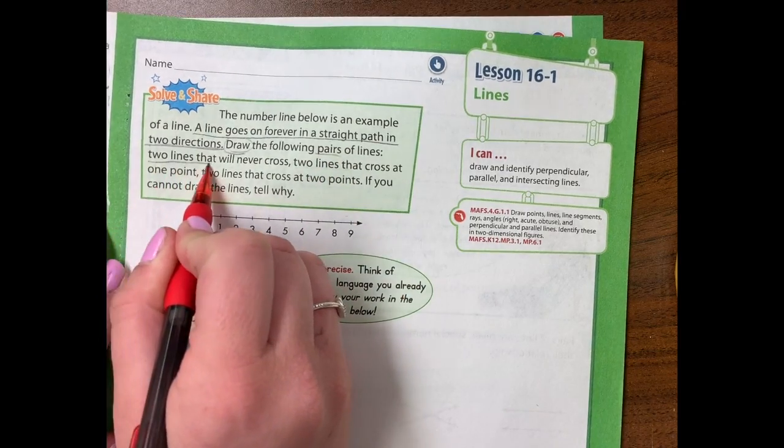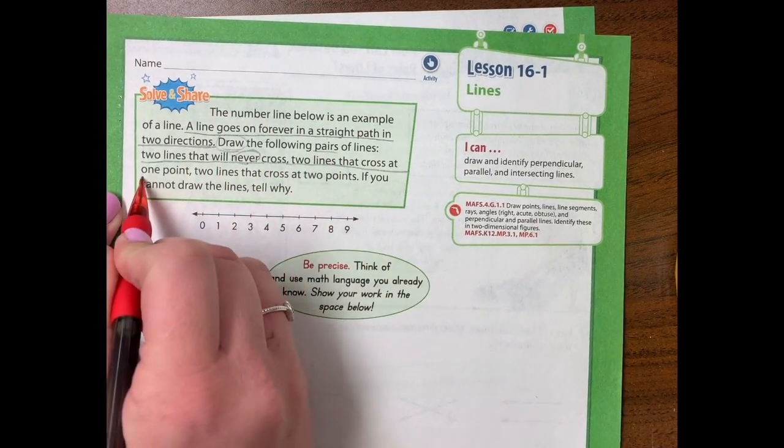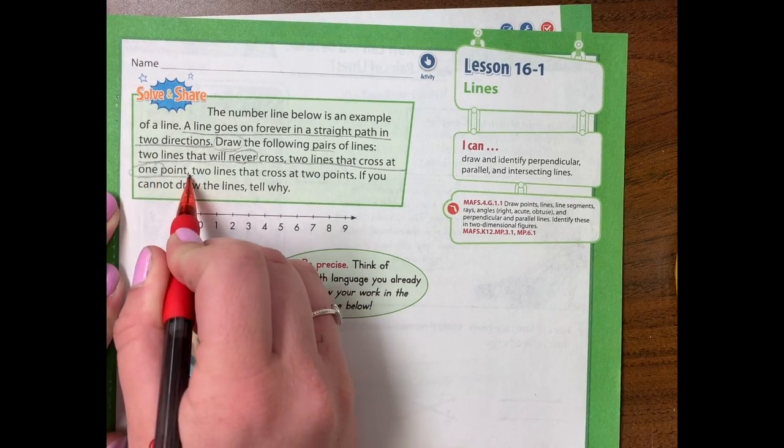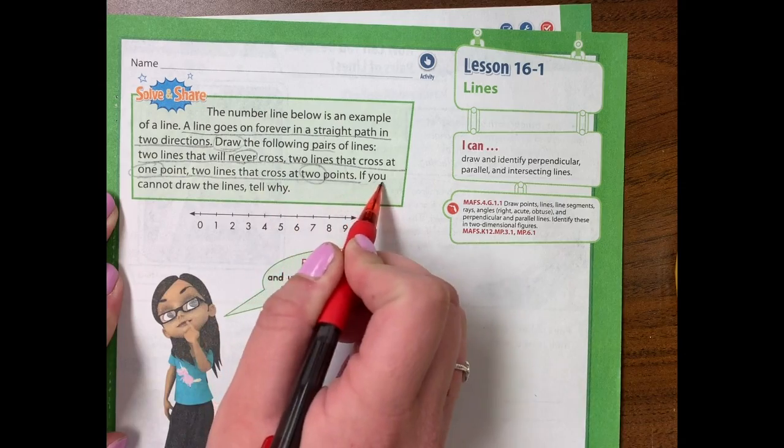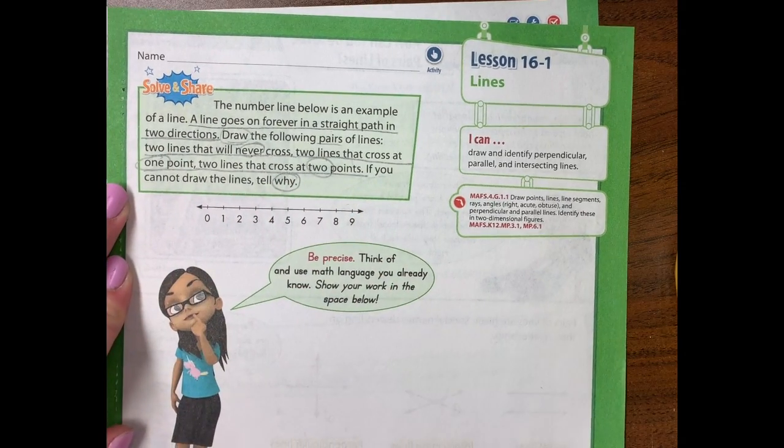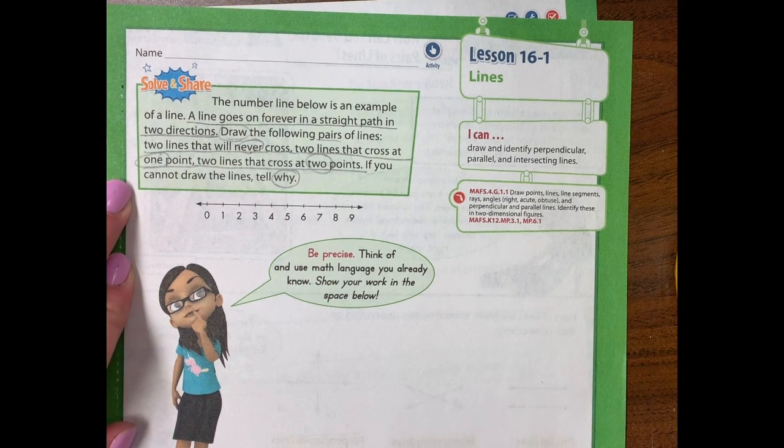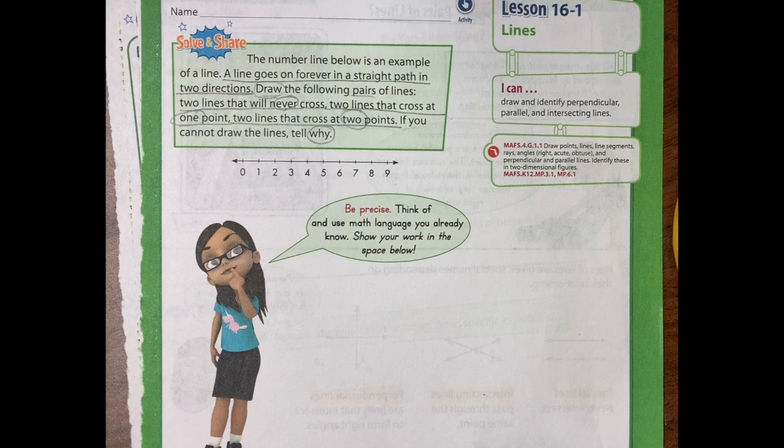Two lines that will never cross. Two lines that cross at one point. Two lines that cross at two points. And if you cannot draw the lines, tell why. I want you to pause the video and try and do it on your own. Now that you've had some time to solve it on your own, let's go over it together.